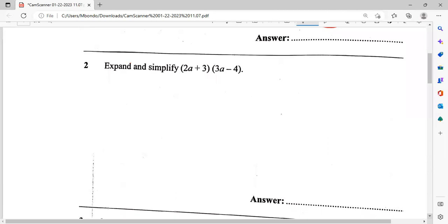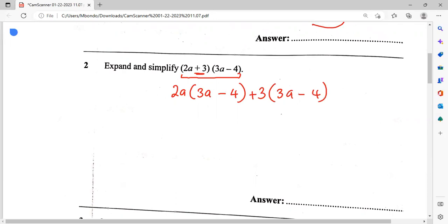How do we expand and simplify this question? So we start with 2a. 2a we multiply it by 3a minus 4, then we get plus 3 and also multiply it by 3a minus 4. So this is going to give us 6a² minus 8a plus 9a here minus 12.